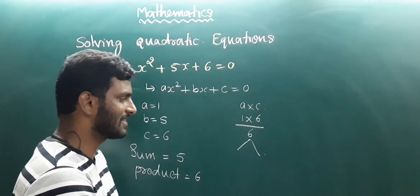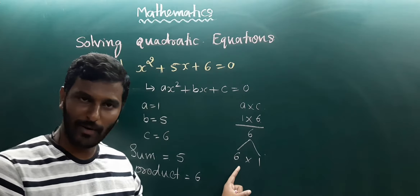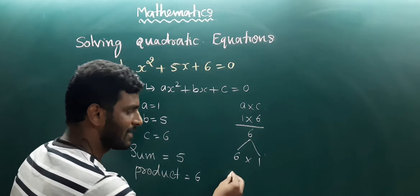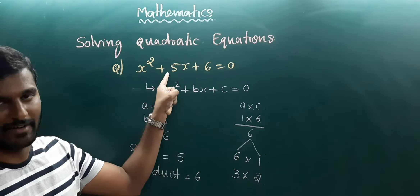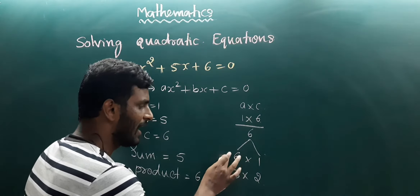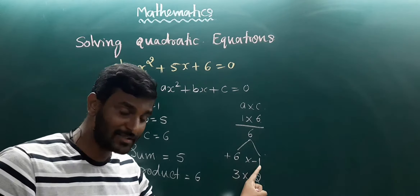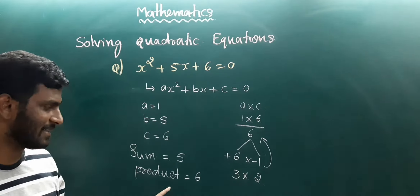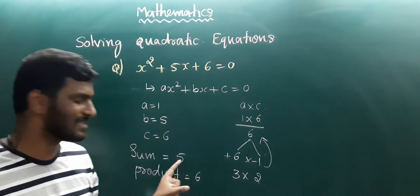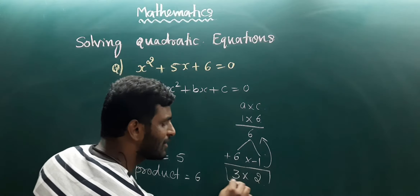So the product is 6. We can factor 6 as 6 into 1, or 3 into 2. For 6 and 1, the sum is 7, not 5. Even taking minus 1 plus 6 doesn't give us product 6. So 6 into 1 is not possible. Hence, 3 and 2 is the correct pair, since 3 times 2 equals 6 and 3 plus 2 equals 5.